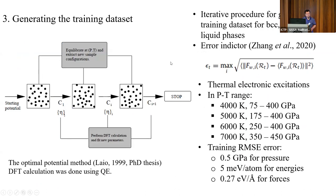To generate the neural network potential, the first question is how to obtain the training dataset. In this study we follow the active learning approach called the optimal potential method. Starting with several initial configurations, we use DeePMD-kit to train four neural network potentials that share the same network architecture but have different random initializations. We then use these four potentials to run MD simulations. Based on the maximum force deviation among the four potentials as an error indicator, we select configurations where the uncertainty is high, label them with DFT simulations, and incorporate the labeled structures to retrain the four potentials. We repeat this process until fewer than 10% of new structures require labeling.